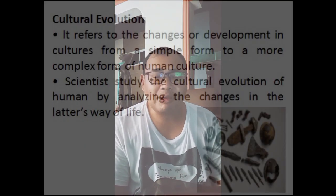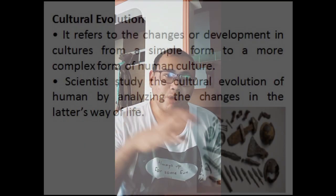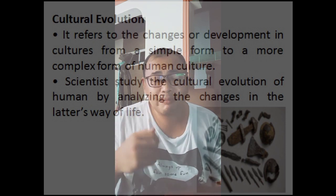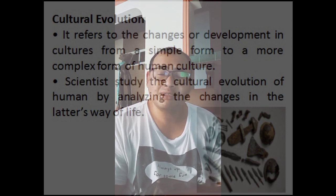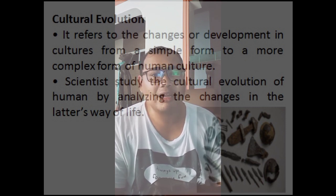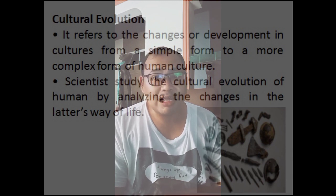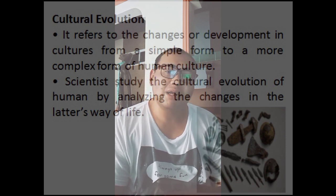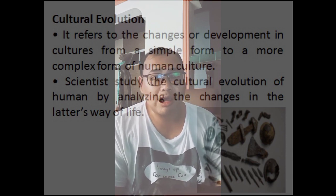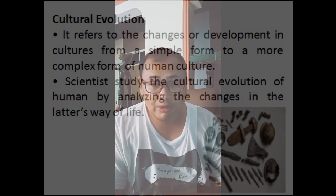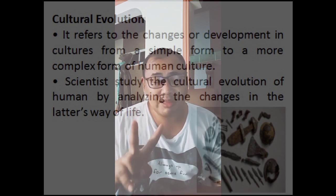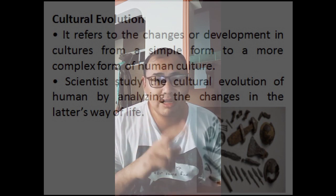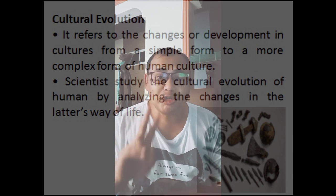Our culture changes — even though we say it is passed down from one generation to another, it still changes because the only permanent thing in the world is change. For example, our gadgets: before, our grandparents used typewriters, then computers came, and now it's cellphones and tablets. So we can see that our culture has two aspects — we have material and non-material culture, and these two types of culture both change.